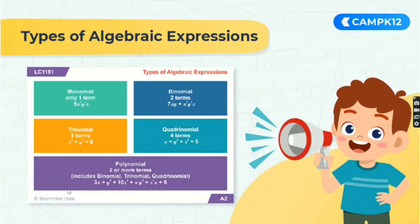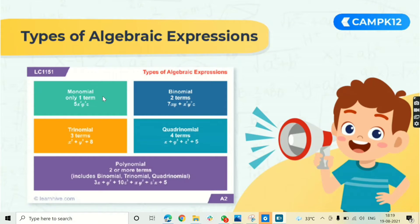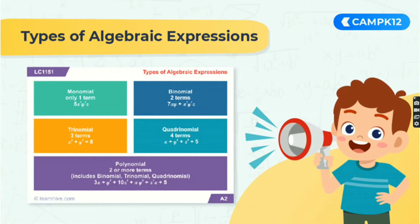Let's now look at the types of algebraic expressions. There are majorly 5 types: monomial, binomial, trinomial, quadrinomial, and polynomial. A monomial has just one term. A binomial has two terms joined with an algebraic operation like addition or subtraction. A trinomial has three terms, a quadrinomial has four terms, and a polynomial has two or more terms. Therefore, binomial, trinomial, and quadrinomial all fall into the category of polynomial algebraic expressions.